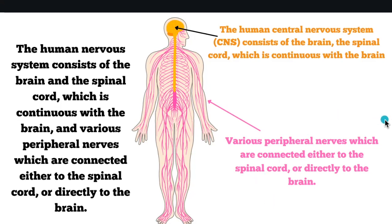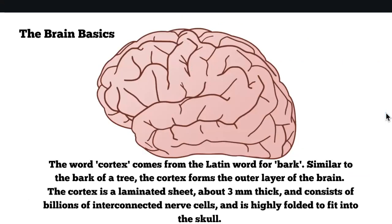Sensory information travels to us from the outside, and that's called afferent. And then we've got efferent nerves, which are signals coming from the brain and spinal cord going outwards. Afferent and efferent.